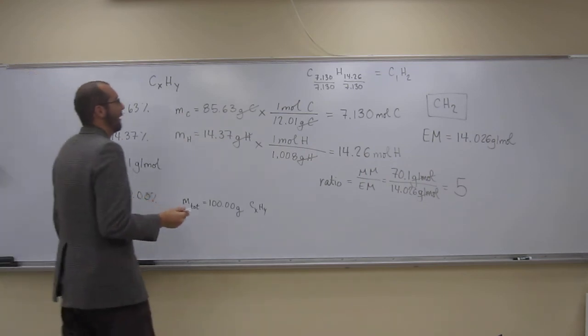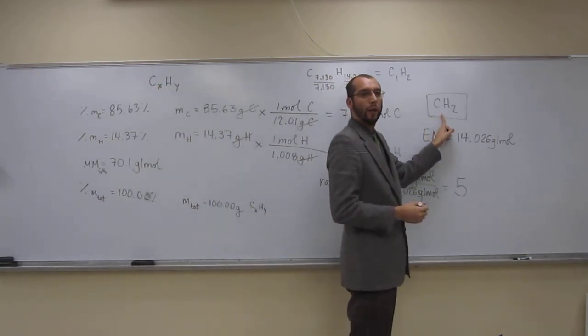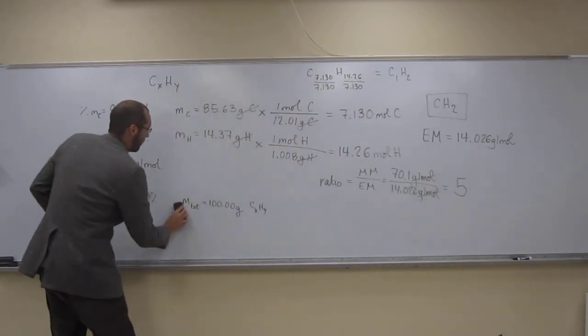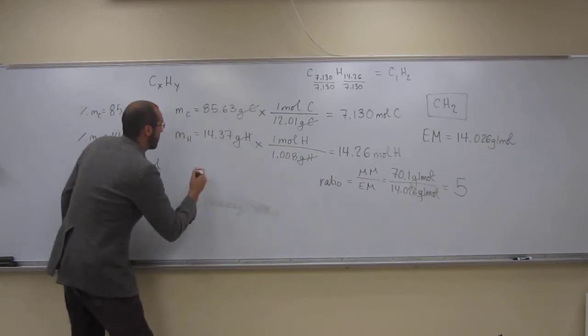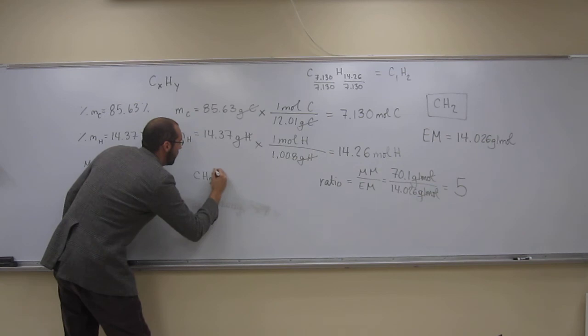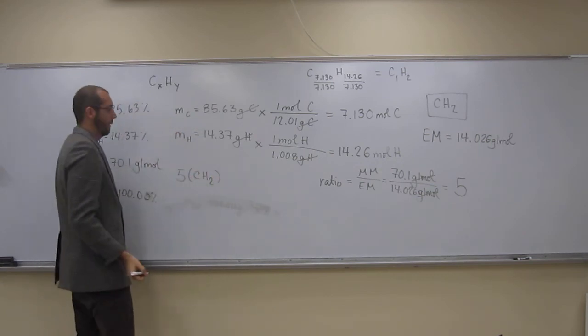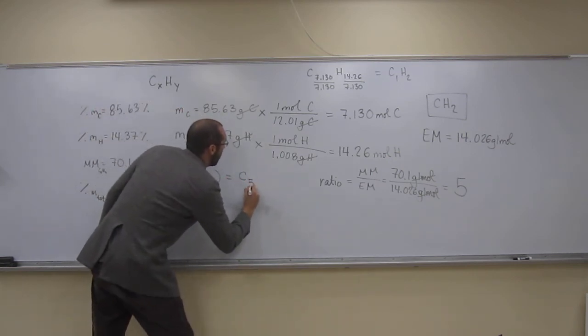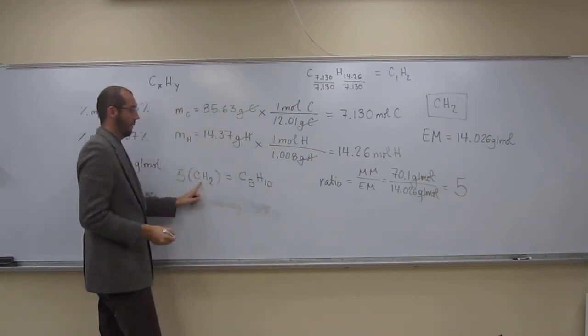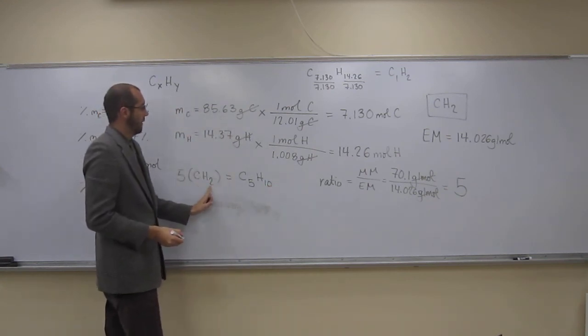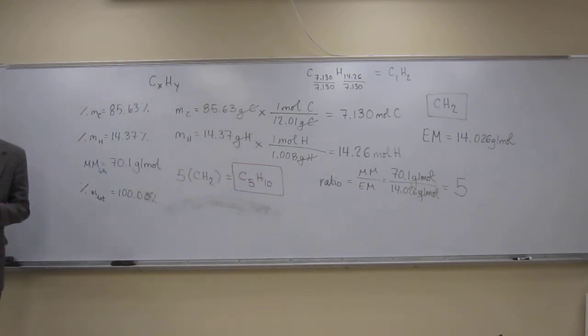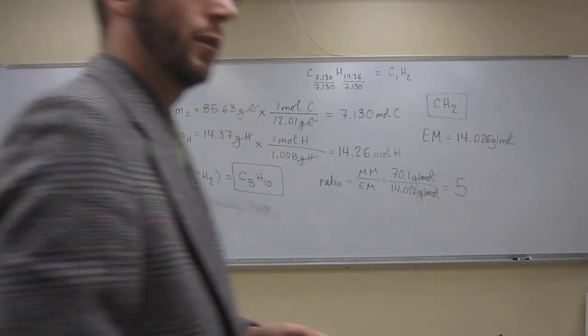So, what do we do? We take this empirical formula, and we multiply each of those by 5. I'm going to erase down here. So, we got CH2 multiplied by 5. But when we do that, we put the 5 there, multiply it on there. So, that's going to equal C5H10. Because 1 times 5 is 5, 2 times 5 is 10. So, the molecular formula for this is C5H10. Any questions? No. Pretty straightforward, right? Good.